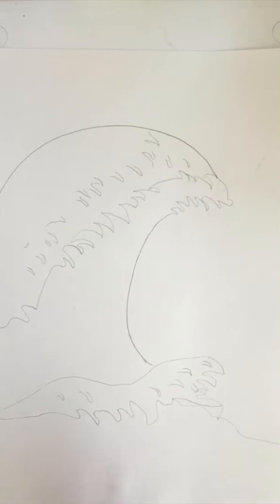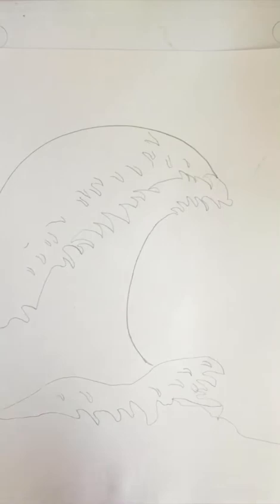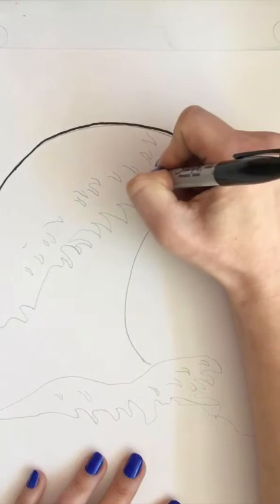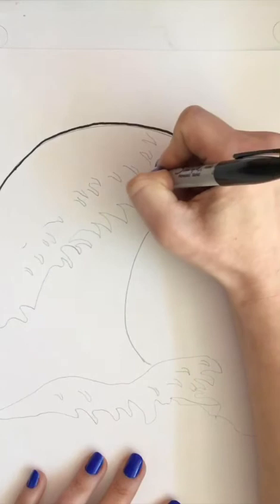When I'm ready, I'll use my sharpie to trace over all those lines I just drew. This gives it a hard, defined edge because Hokusai was a Japanese painter and printer, and when you print you usually have dark lines as your edges.